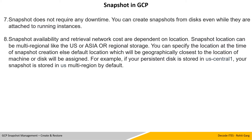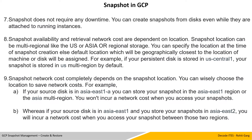That means if your VM instance is part of the US region or Asia region, Compute Engine will automatically assign US multi-region or Asia multi-region as the snapshot location. For example, if your persistent disk is stored in US Central 1, your snapshot is stored in US multi-region by default. Snapshot network cost completely depends on the snapshot location, so you can wisely choose the location to save on network cost. For example, if your source disk or instance is in Asia East 1, you can store your snapshot in Asia East 1 region or Asia multi-region and you would not incur a network cost.